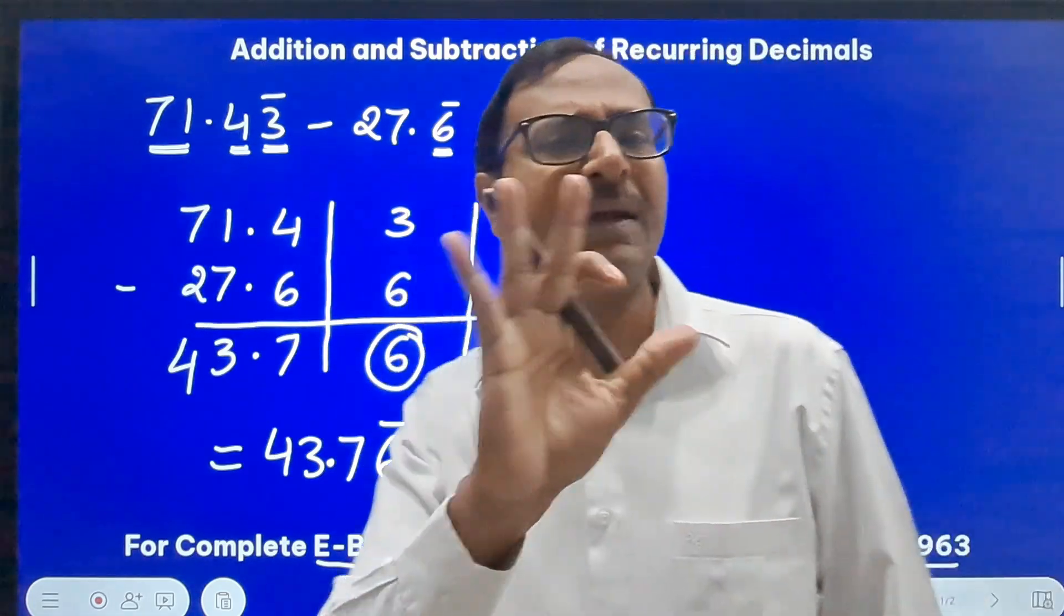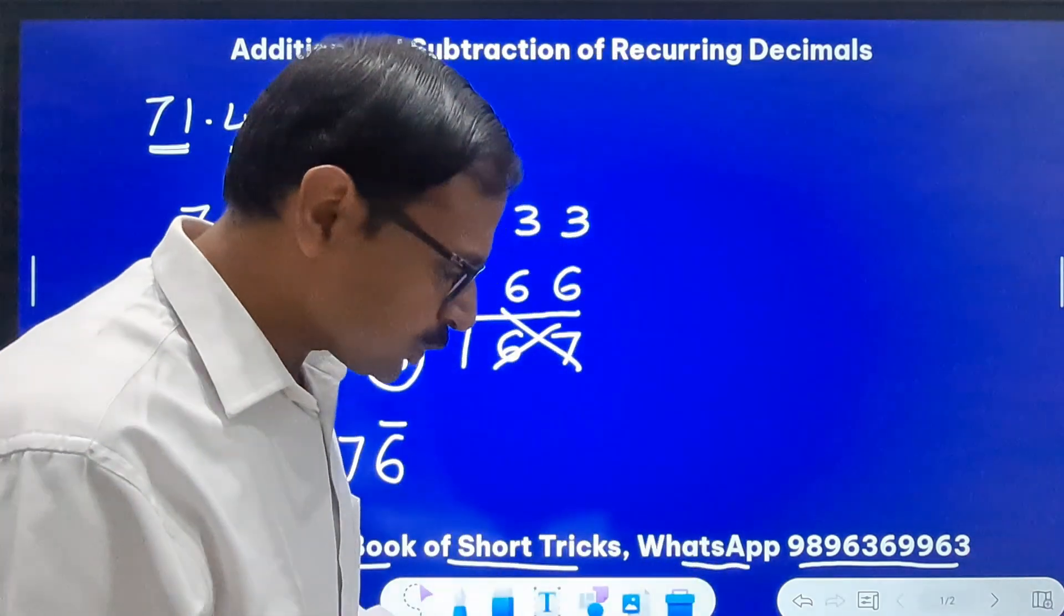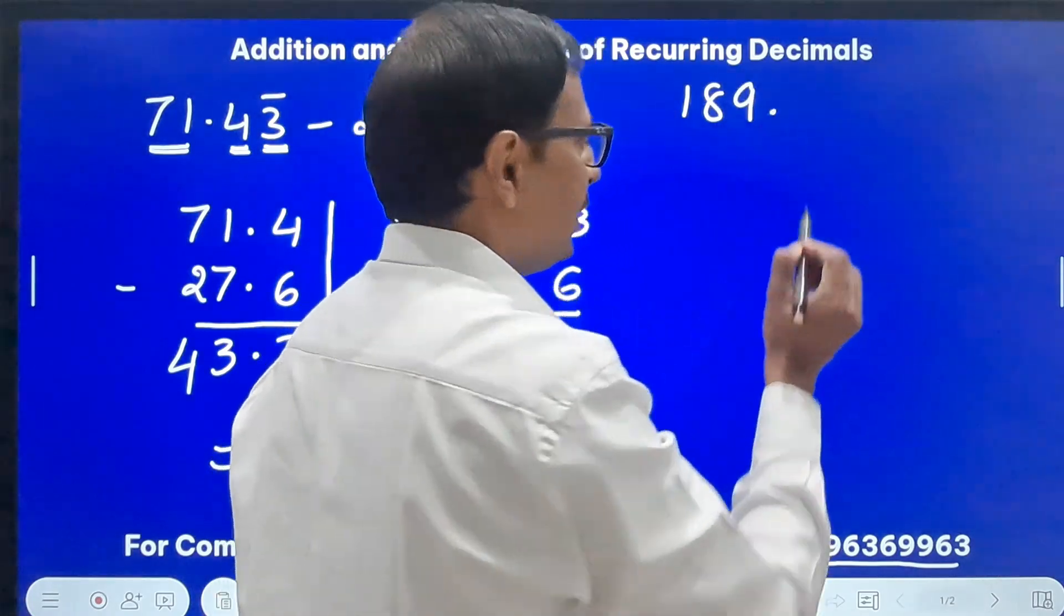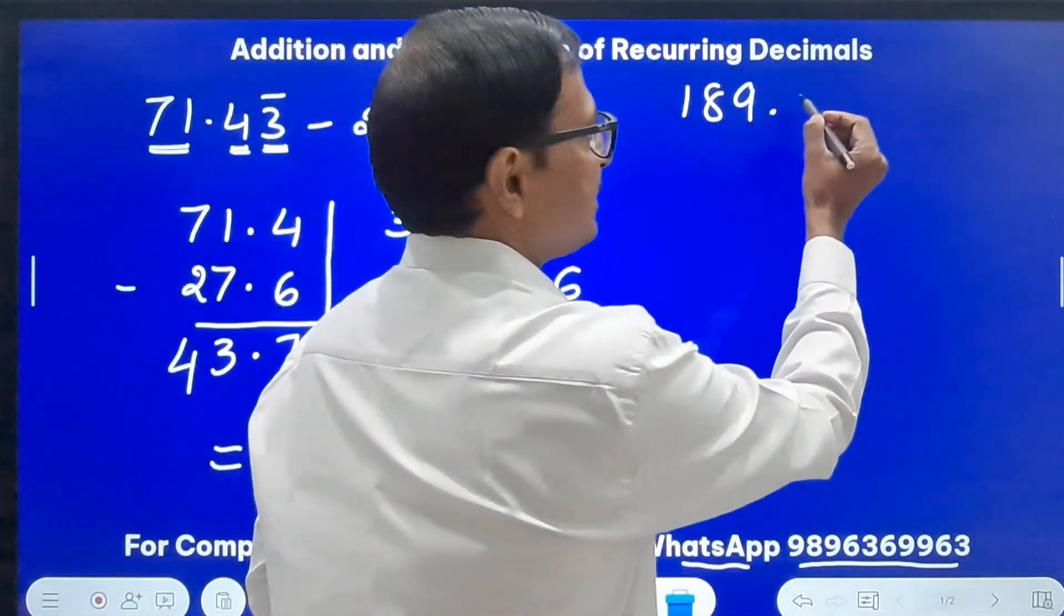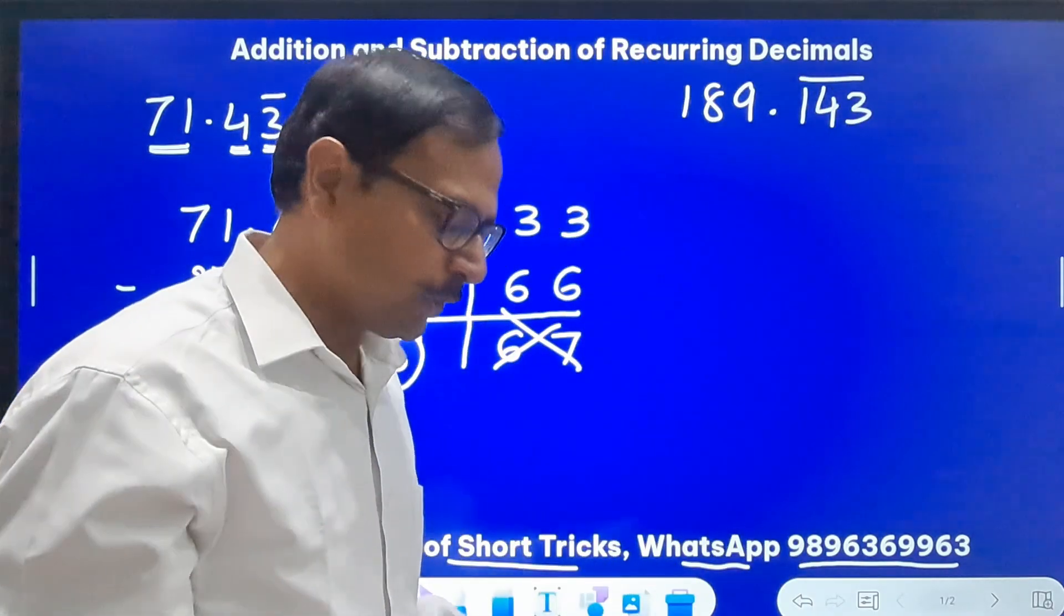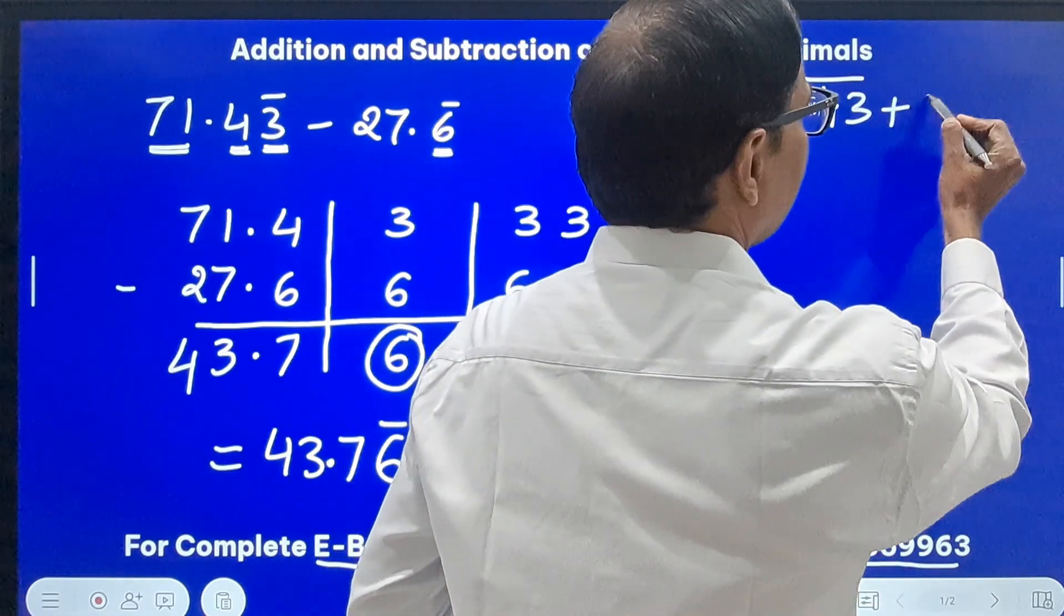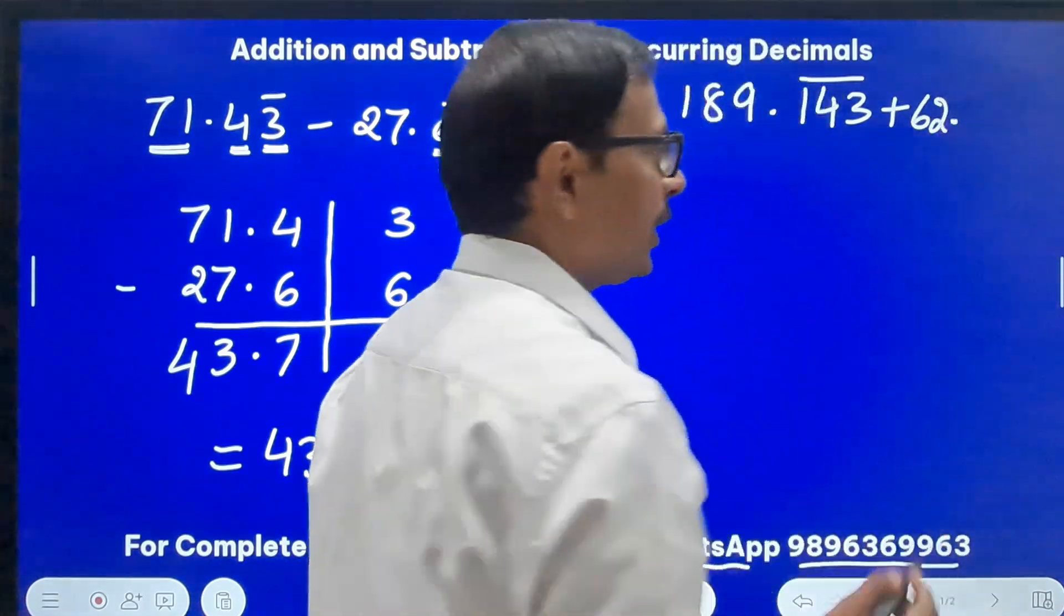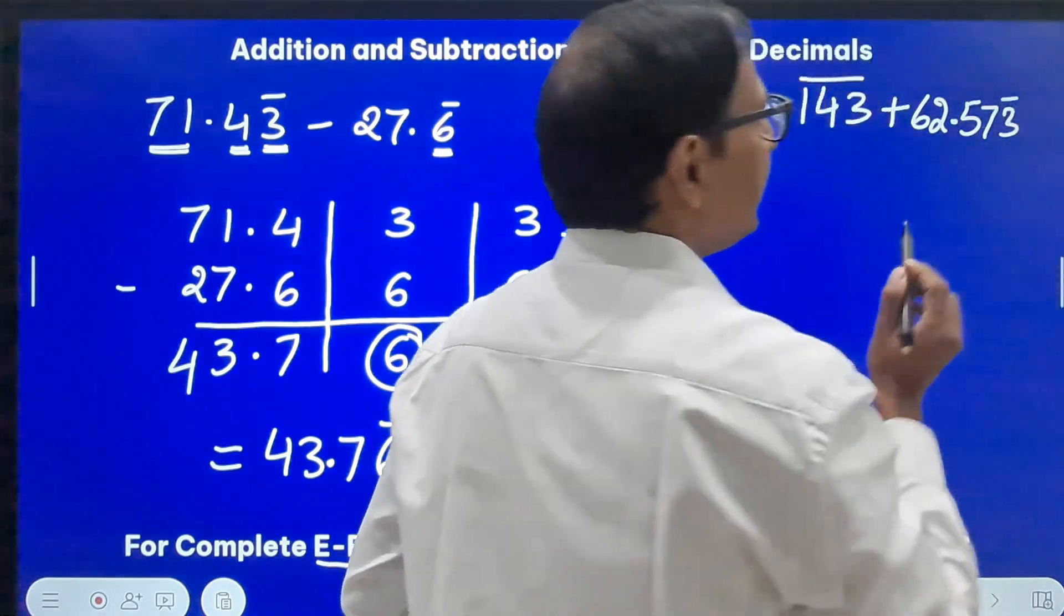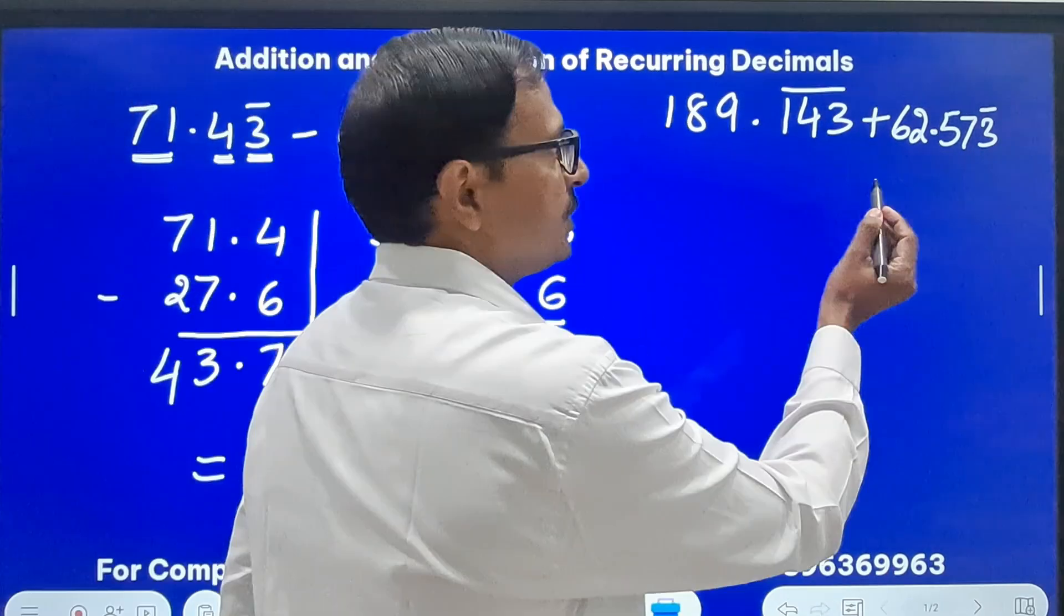I will take one more question. I will move to addition now. So the question is 189 and in the decimal part I have 143 and all three are repeating. In the second part we have 62.573 and only the three is repeating.